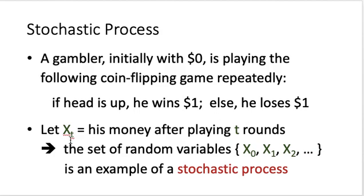Initially X_0 when t equals zero is equal to zero. X_1 represents his money after playing one round, so X_1 could assume a value of either 1 or minus 1. X_2 will be the money after playing two rounds, so the value of X_t when t equals two could be 2, 0, or minus 2. If we look at all the X_t together — X_0, X_1, X_2, and so on — we call this collection of random variables a stochastic process.